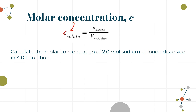Let's do some math with our first formula. The concentration of the solute equals n — the number of moles of solute — divided by the volume of the solution (the whole solution, not just the solvent). In grade 10 chemistry we learned this as: molarity equals moles divided by liters.